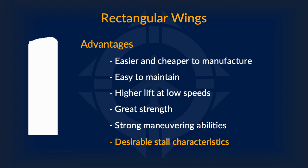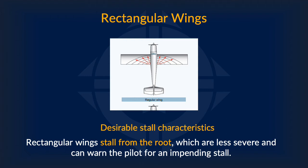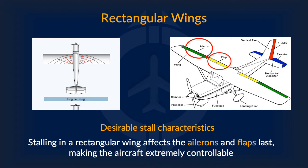You may be wondering about desirable stall characteristics — what does that mean? Rectangular wings stall from the root, meaning that when an airplane is about to stall, the roots are affected first. Root stalls are desirable as they are less severe, so there is relatively less danger. It warns the pilot of the impending stall, giving ample time to recover. Stalling reaches the ailerons and flaps last, so a pilot can still control them to manage the angle of attack even after the roots begin to stall, giving a lot of control for the pilot.